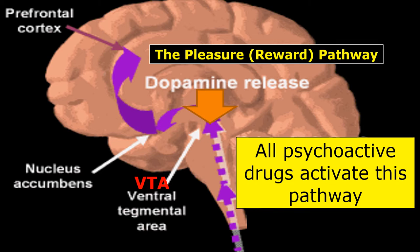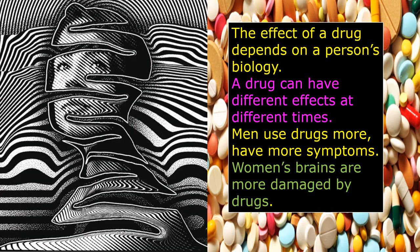So all psychoactive substances activate this pleasure pathway. The effect that a drug will have on a person's biology is somewhat predictable, but not always, because it depends upon the particular person — a drug can have different effects at different times. For example, men use drugs more and have more symptoms, but women's brains are more damaged by drugs.